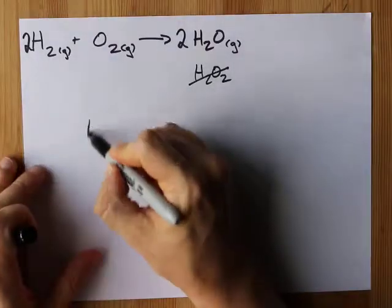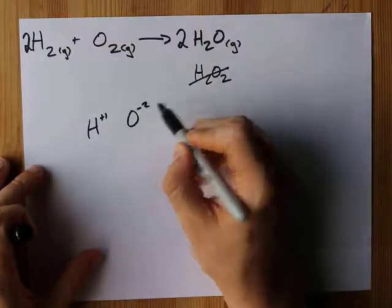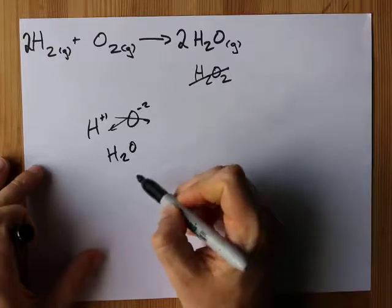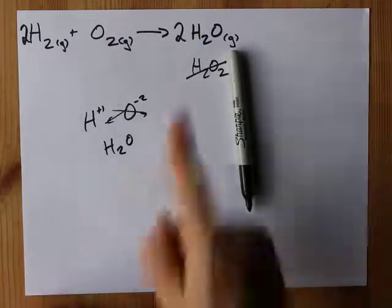H generally brings a charge of plus one and O generally brings a charge of minus two. You crisscross those to make a formula, you're going to get H2O, not H2O2. Hey, accept it. Best of luck.